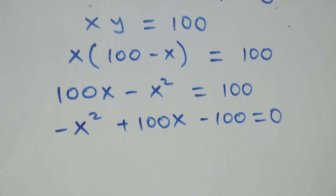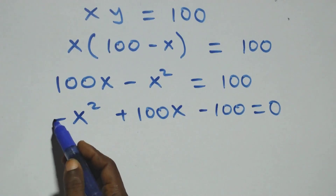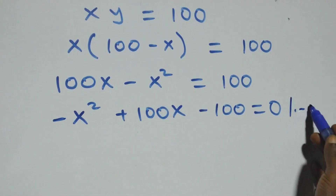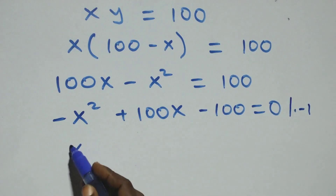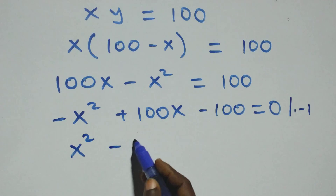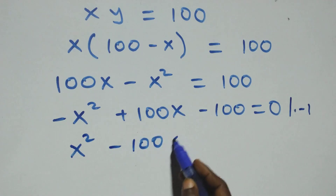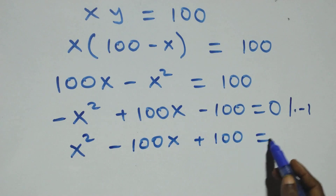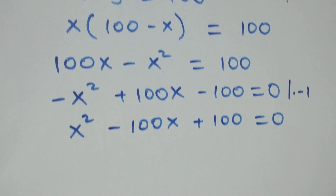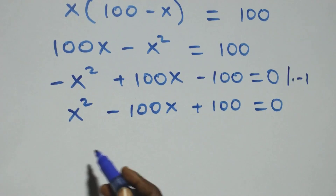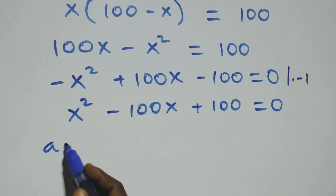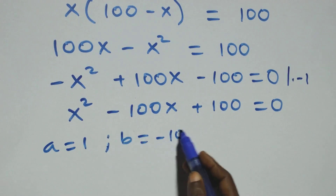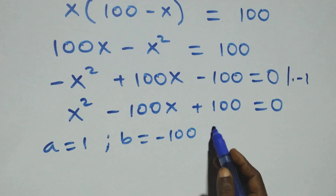To get rid of this minus, we multiply through by minus one. This becomes plus x squared, minus 100x, plus 100, equals to zero. We now have a quadratic equation where a equals to 1, b equals to minus 100, and c equals to 100.